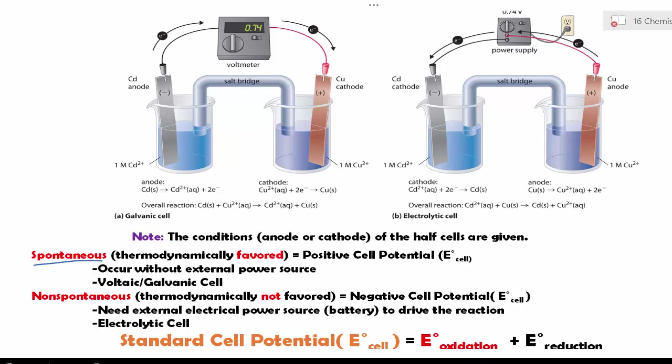In the last lesson, we talked about redox reactions in terms of half cells, and how we can use the reduction potentials of the half cells to solve for the E cell potentials. In this lesson, we are going to talk about the two types of redox reactions. The first type is called spontaneous redox reaction.